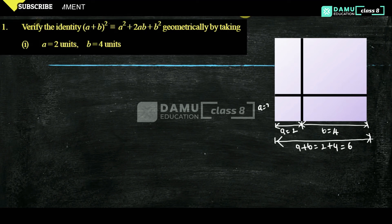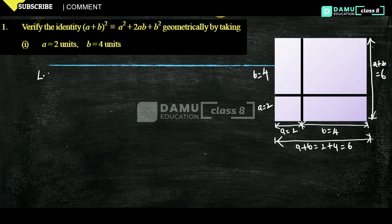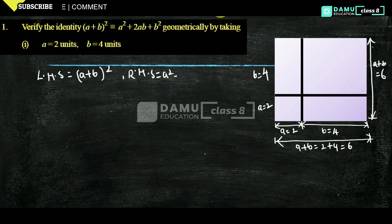Here also the same: a equals 2, b equals 4, so total from here to here, a plus b will be equal to 6. Those are the measurements. In order to prove this, the left-hand side will be equal to (a + b) whole square.